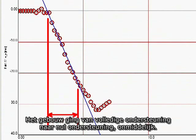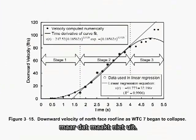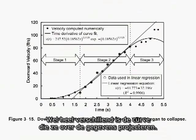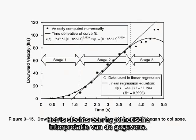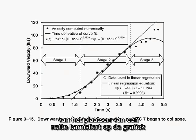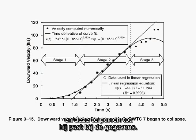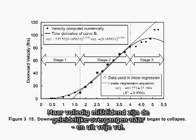The building went from full support to zero support instantly. NIST's graph is upside down relative to mine, but that's really not an issue — their data is almost the same. What is dramatically different is the curve they superimpose on the data. This curve has no physical significance whatsoever; it is merely a hypothetical interpretation of the data. It is literally the mathematical equivalent of laying a wet noodle on the graph and nudging it around until it fits the data. The straight part fits reasonably well, but what is totally misleading are the gradual transitions into and out of freefall.